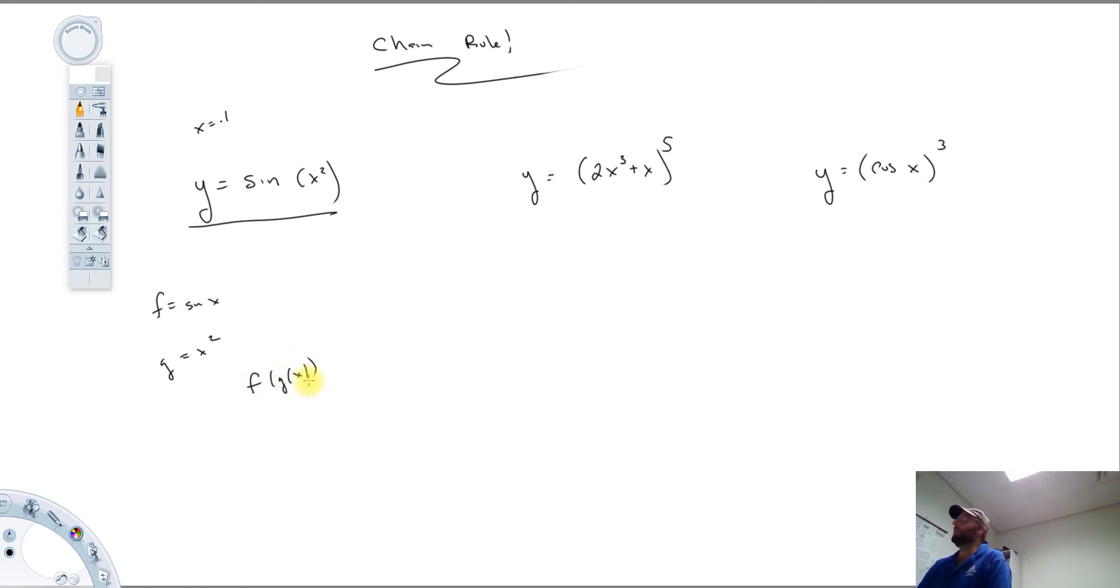So when you differentiate, you apply the chain rule. And what I always do is start on the outside, work your way in. So I'm going to go through some examples of that. And I'm not going to worry about simplifying. The differentiation part is just going to be the first line.